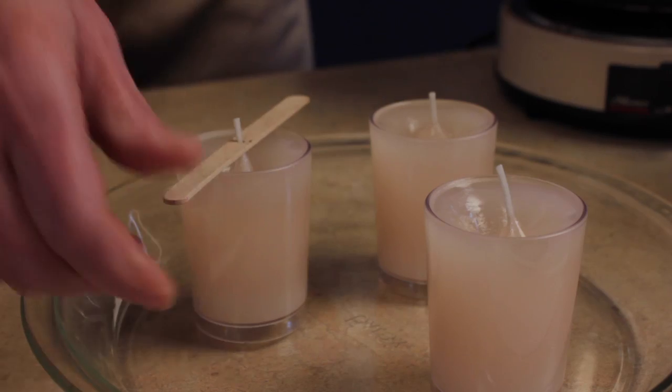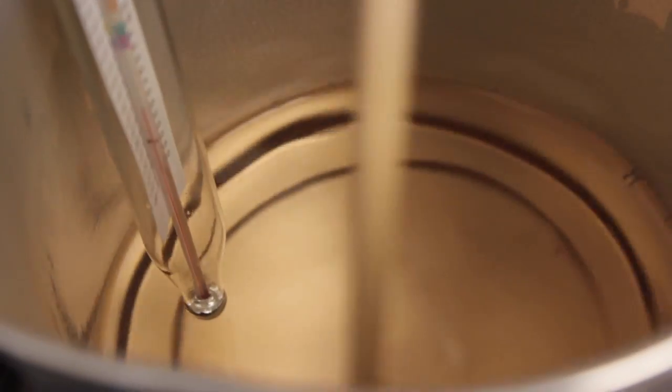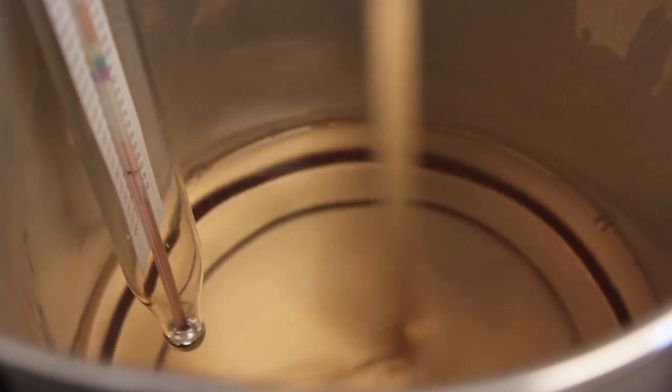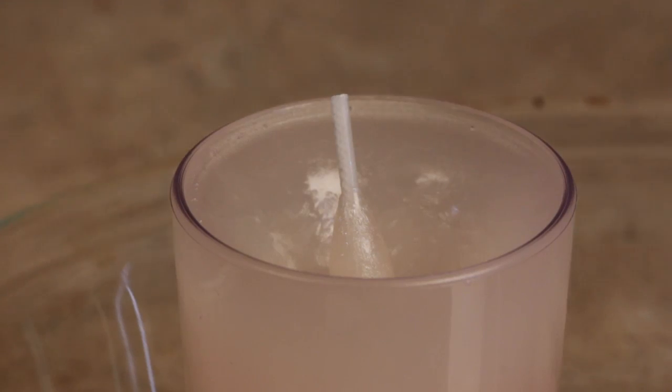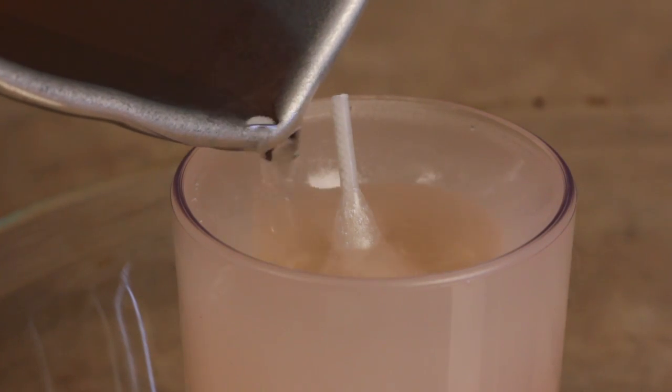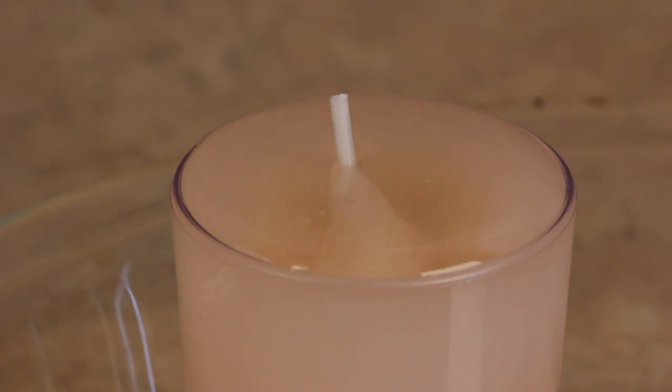Remove the popsicle stick as it's no longer needed. Repeat the process of heating the remaining wax to 180 degrees Fahrenheit. Remove the thermometer and turn off the heat source. Carefully pour your second layer of wax into the well around the wick and then continue filling the votive until the wax reaches the top edge of the cup.